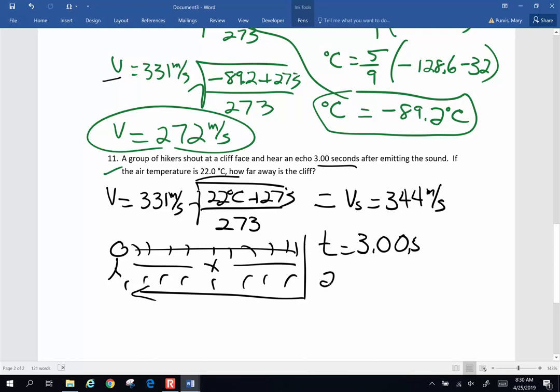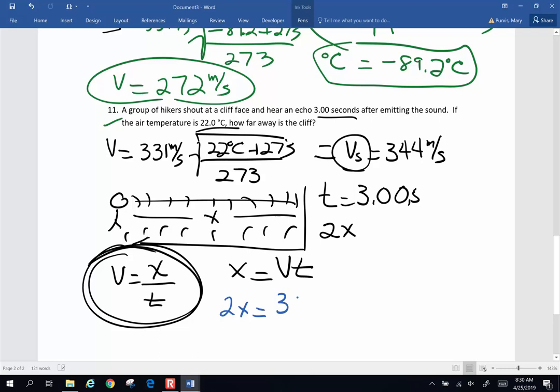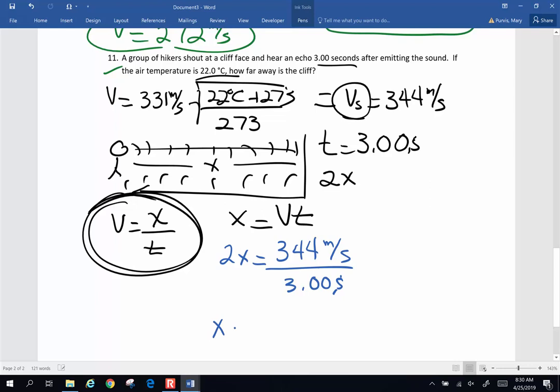So it's traveled 2X is the distance. We know our velocity. Now we have a simple speed time distance problem. We know velocity is distance or displacement over time. We can use the constant velocity equation because it's not accelerating. And we're going to solve for X. So X is going to be velocity times time. And we're going to plug the numbers in. So I'm going to have 2X is 344 meters per second times 3 seconds. And if I do this, X is going to be, when I do all the math, divided by 3 and then divided by 2, I get 516 meters is the distance to the cliff.